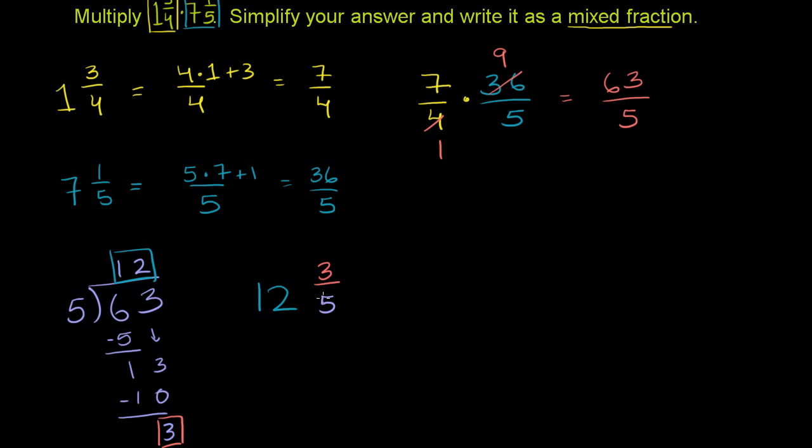And if you wanted to go back from this to that, just think. 12 is the same thing as 60 fifths, or 60 over 5. 60 over 5 plus 3 over 5 is 63 over 5. So these two things are the same thing. These two things are equivalent. This is as an improper fraction. This is as a mixed number, or a mixed fraction. But this is our answer. Right there, 12 and 3 fifths.